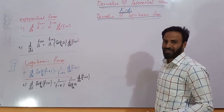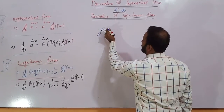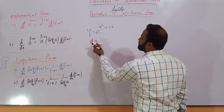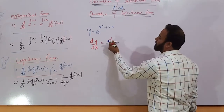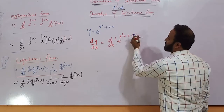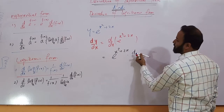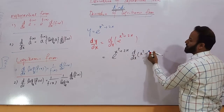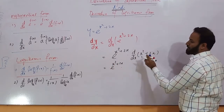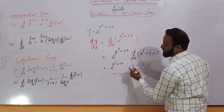Let's take a few examples. If y equals e raised to power (x² + 2x), then the derivative is, as it is e^(x²+2x), and then the derivative of the exponent: derivative of x² is 2x, derivative of 2x is 2. So the required answer is e^(x²+2x) times (2x + 2).